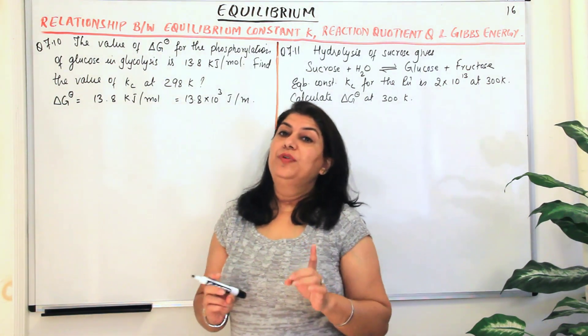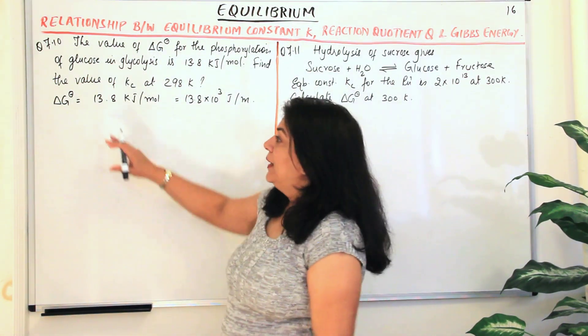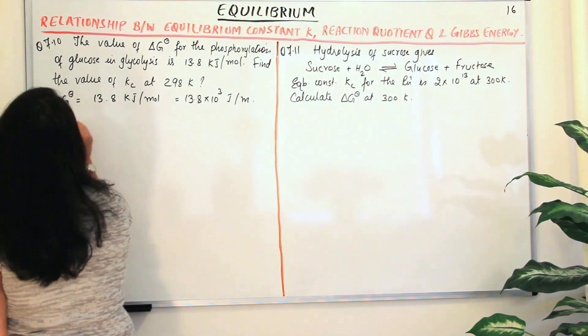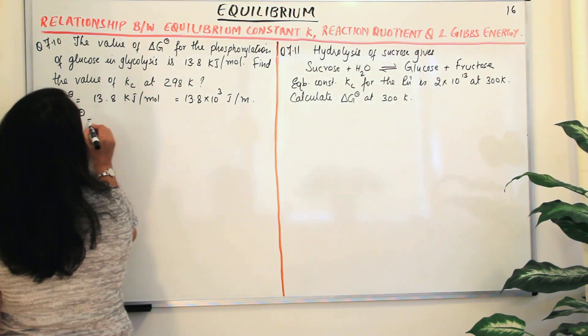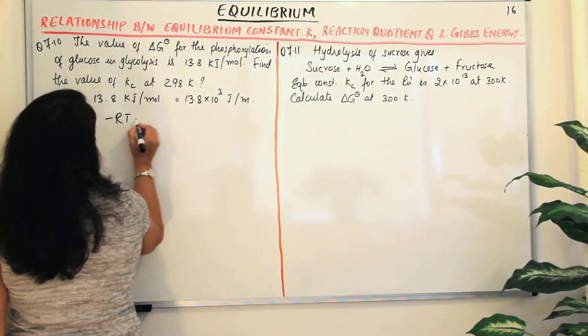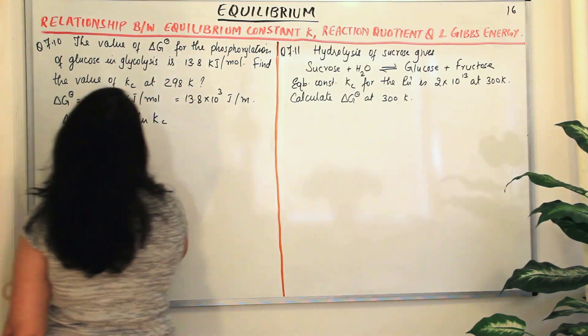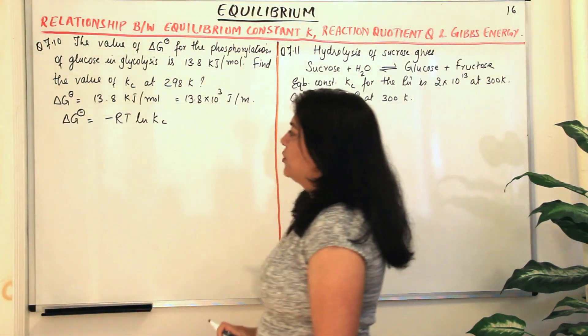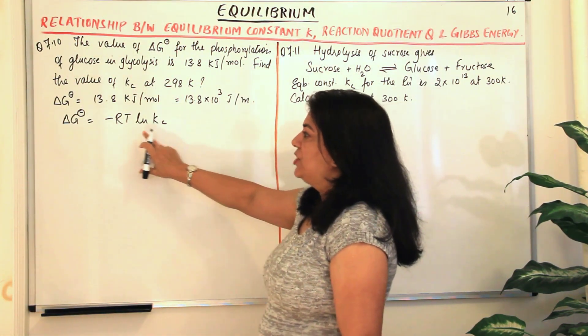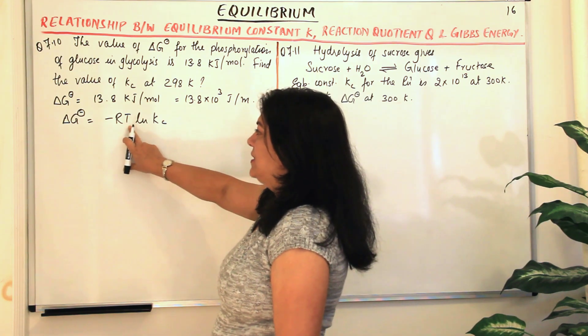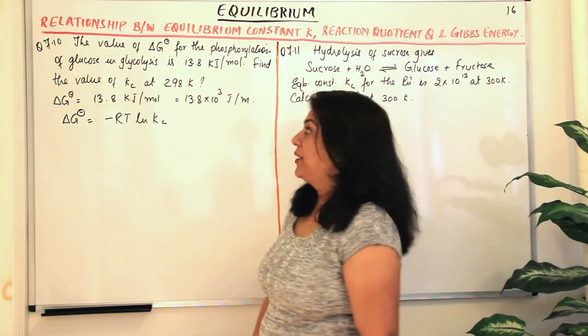Now we know from the video of part 15 that delta G naught is equal to minus RT ln Kc, where Kc is the equilibrium constant in terms of concentration, R is the gas constant, and T is the absolute temperature.